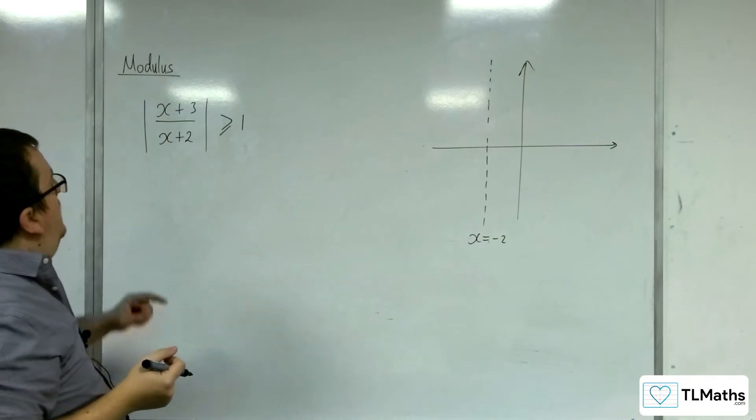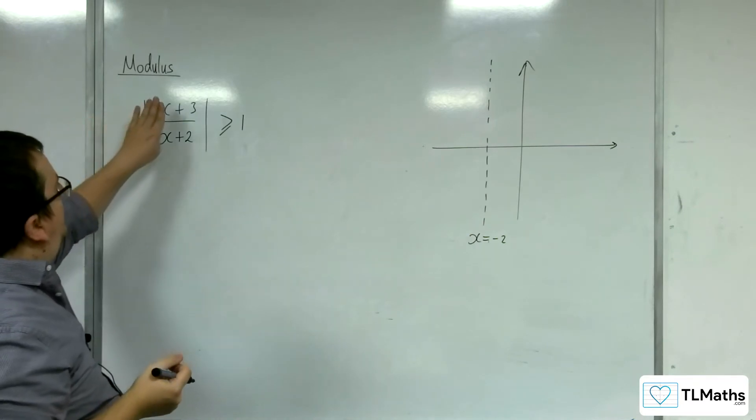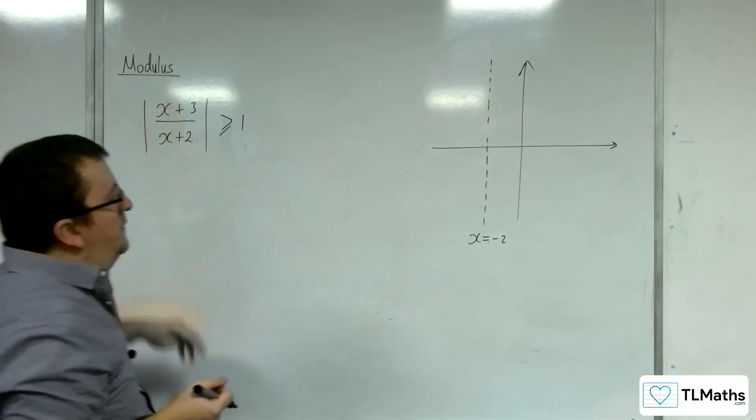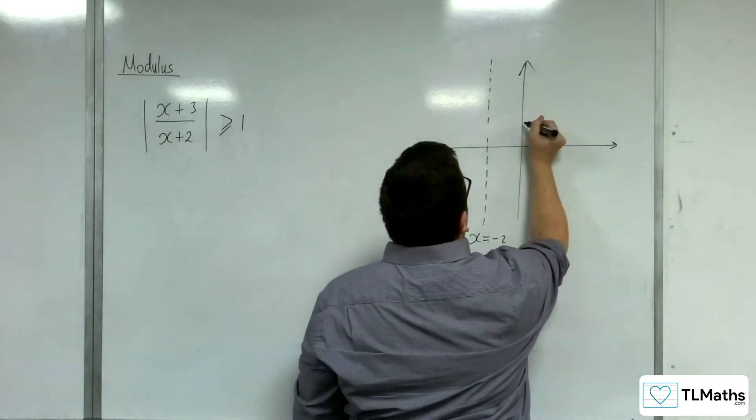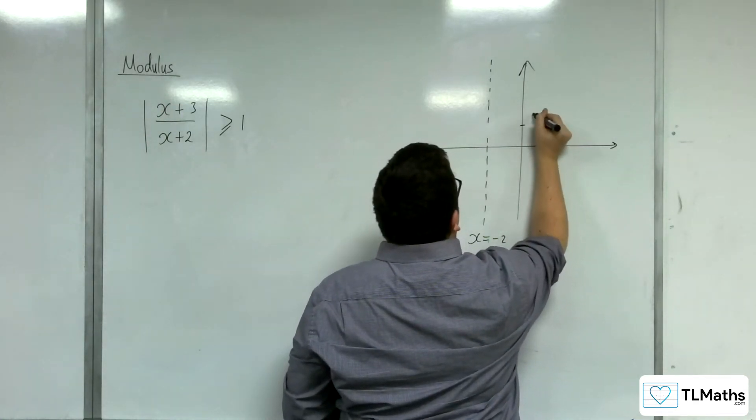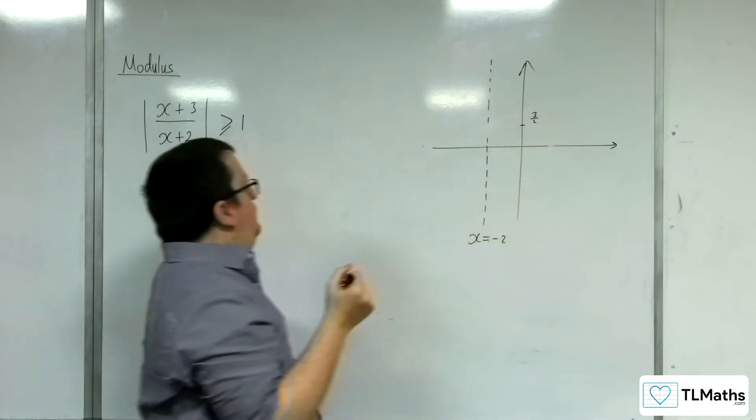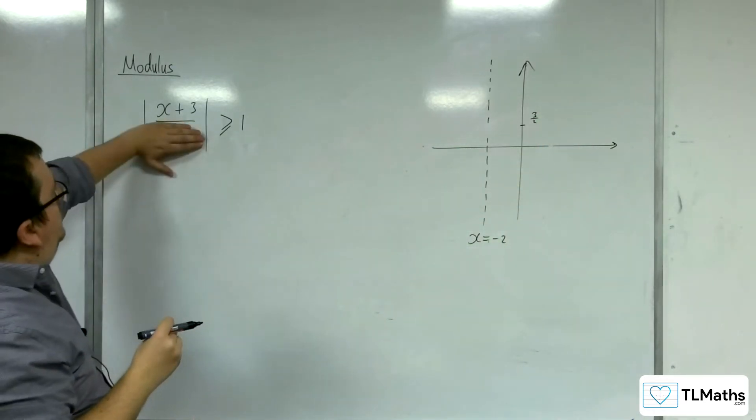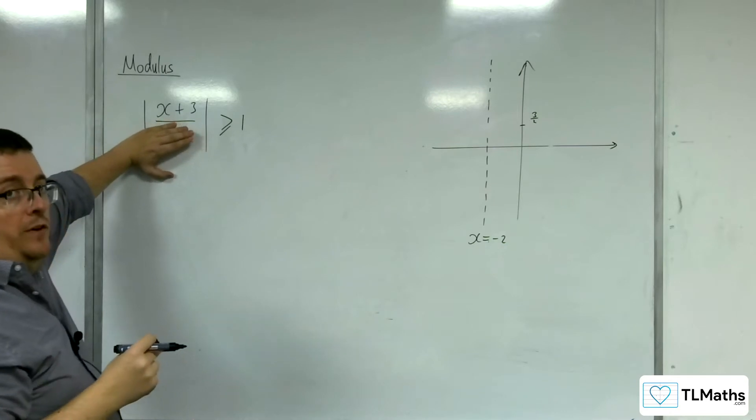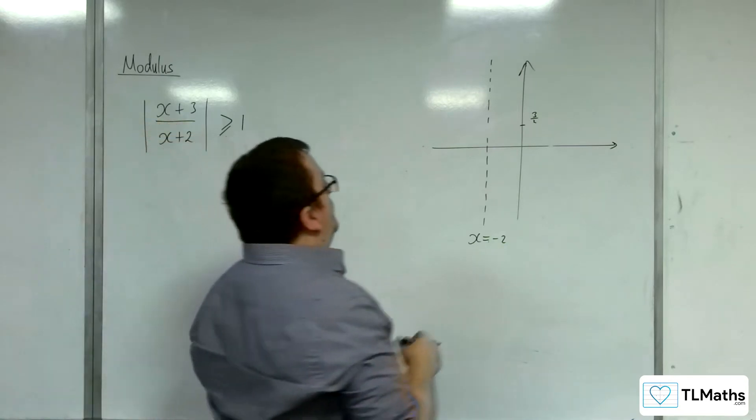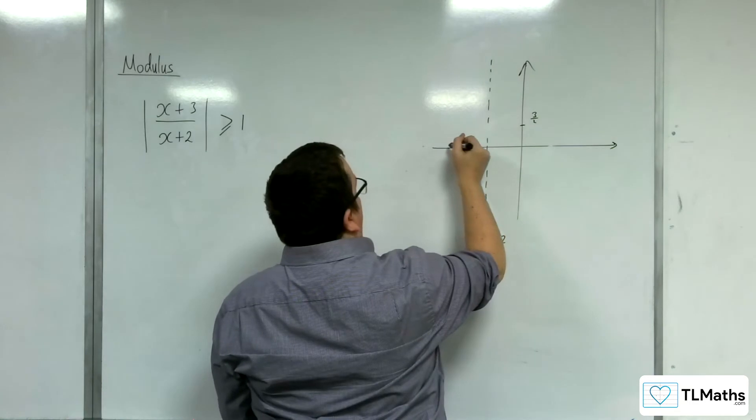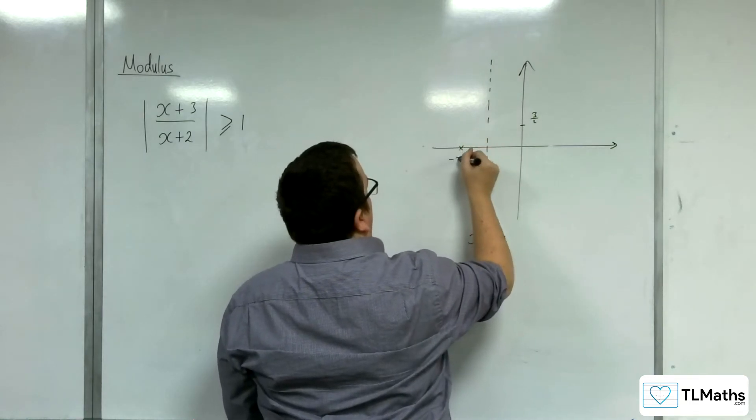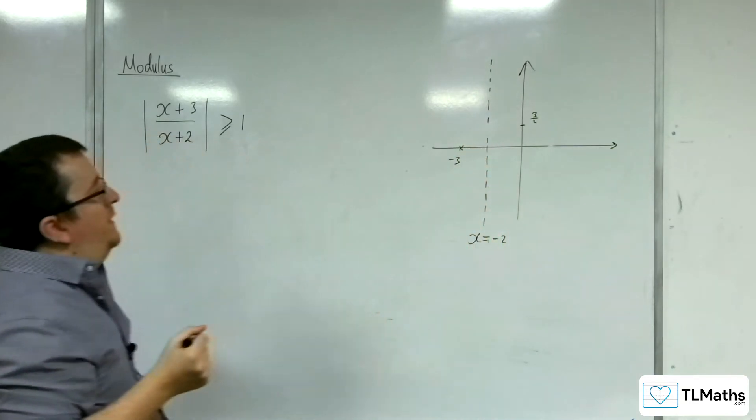Now when x is 0, we've got 3 halves, so it's crossing through the y-axis at 3 halves. When y is 0, x would have to be minus 3—that's when the numerator is 0. So x equals minus 3 is where it's crossing the x-axis.